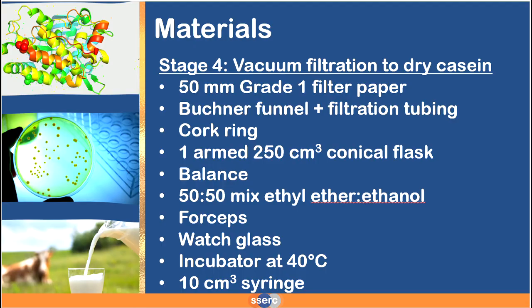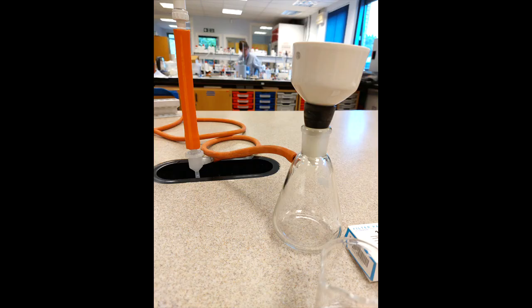And now we are going to continue washing but also drying at the same time. This is going to involve using a Buchner funnel and a filtration tubing system with a conical flask with a one arm so that you can connect that to your filtration through the tap.